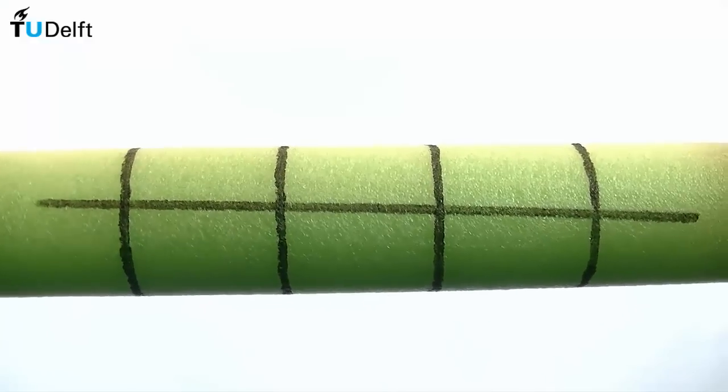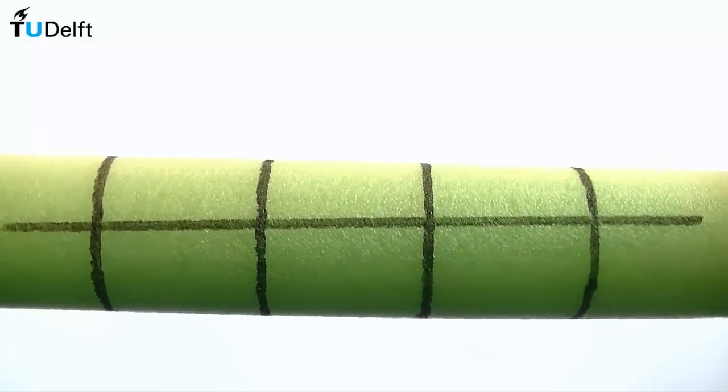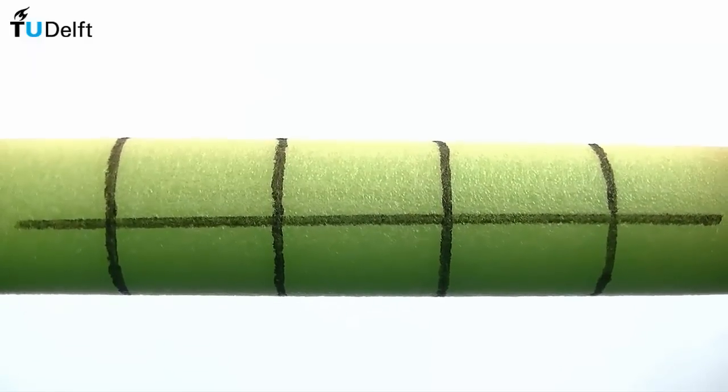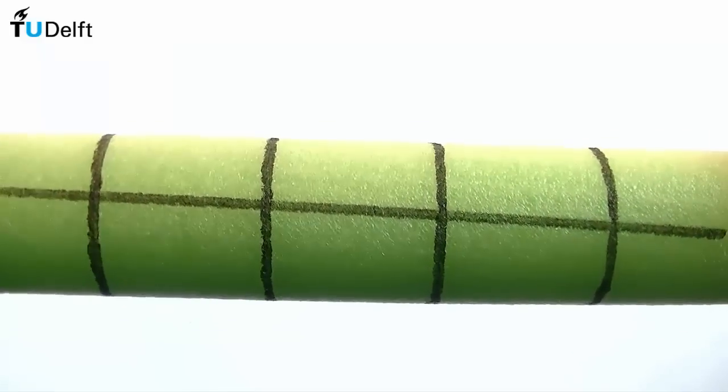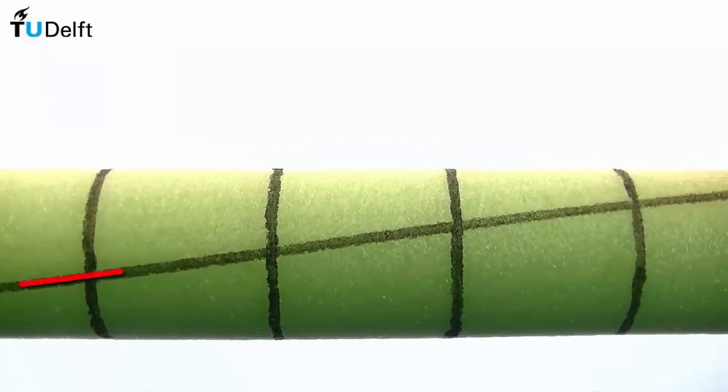Observe what happens to these lines when an alternating torsional load is applied to the shaft. Two observations can be made. First, the four circumferential lines rotate but do not displace or distort. Second, the line along the axis of the shaft rotates through an angle but remains straight.